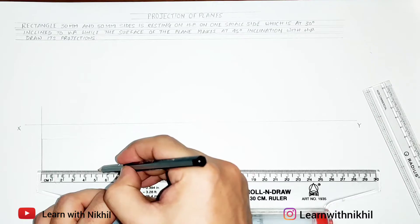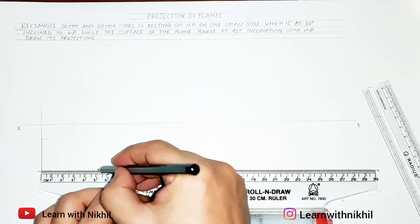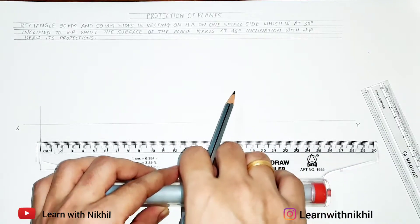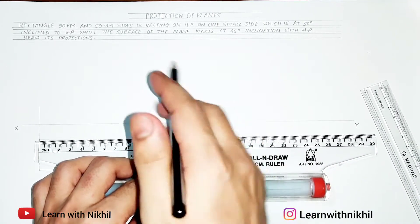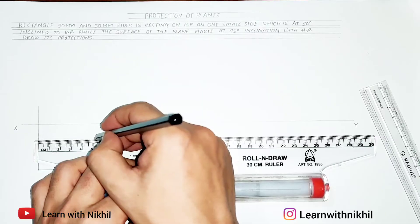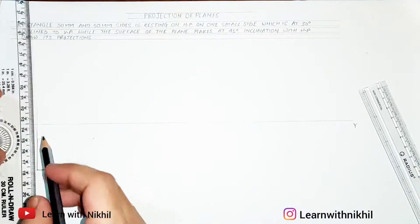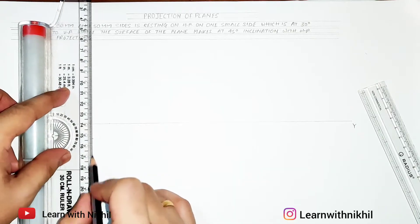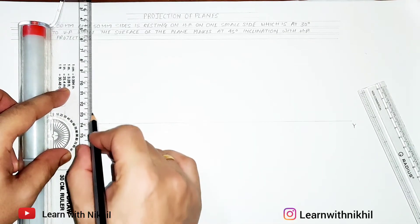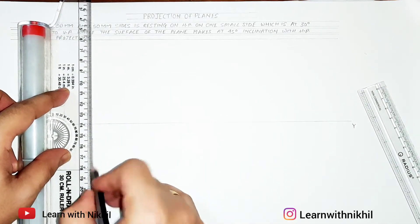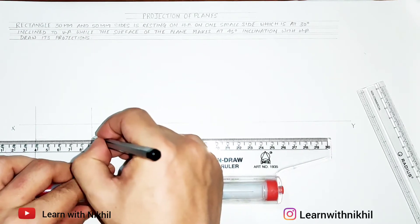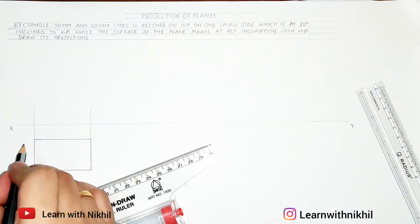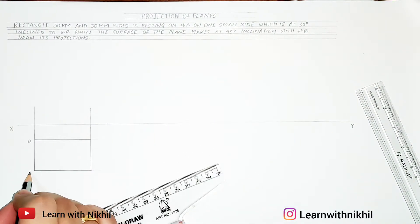I'll mark a point at 50 mm, draw light lines, and make them dark. I'll do the same on the upper side, or you can directly take a parallel line from that point to make a rectangle. So this is the top view of the rectangle. I'll name the sides as A, B, C, and D.